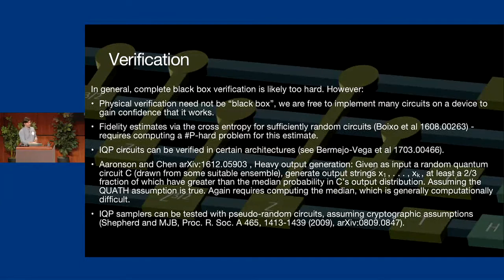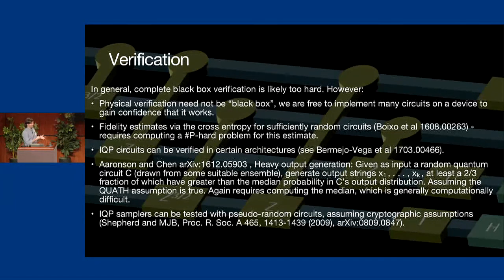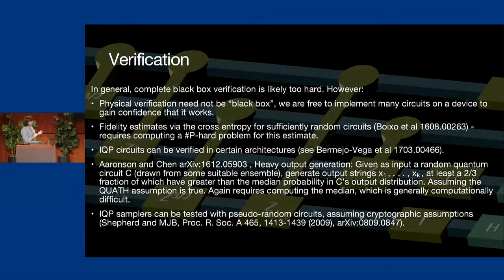This brings me to the problem of verification. For randomized circuit sampling arguments, one of the key issues is actually verifying that our randomized circuit sampler is producing what it claims to produce. In general, complete black-box verification is likely just too hard. Beyond circuits for which we can do a lot of numerical testing, it doesn't make sense to try to verify these circuits fully. However, we can probe and test these systems in other ways to get a degree of confidence that our system is doing what it's supposed to do.